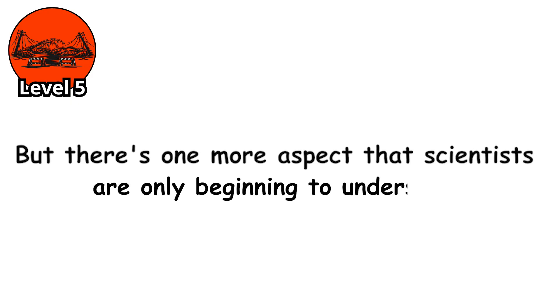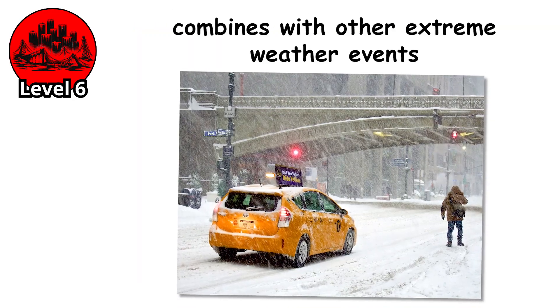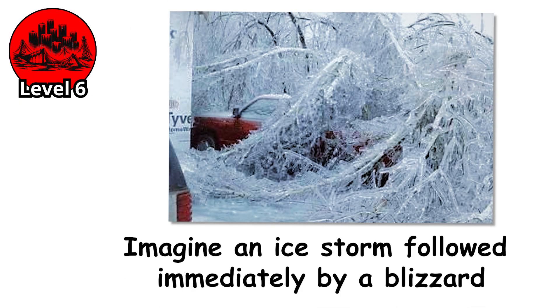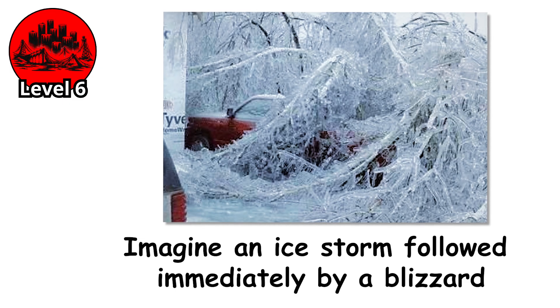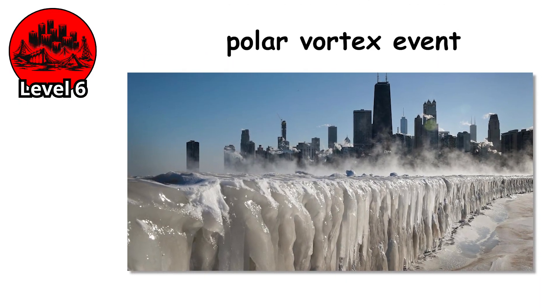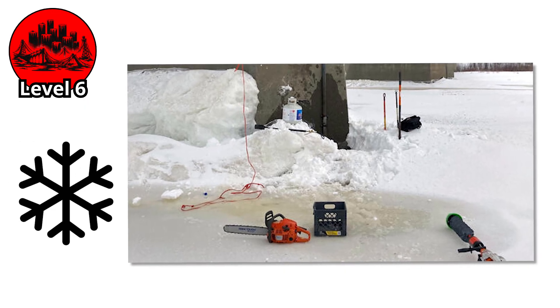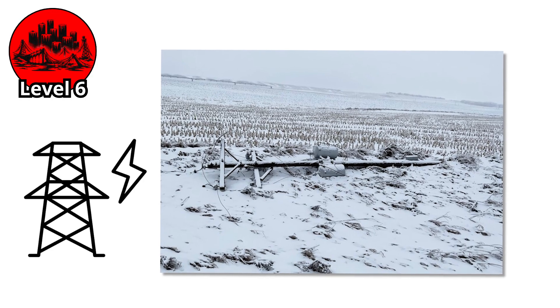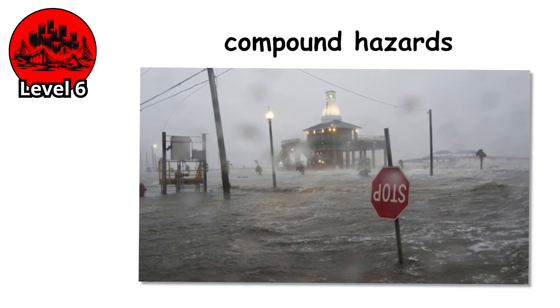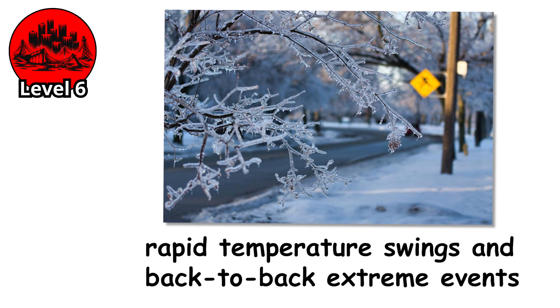But there's one more aspect that scientists are only beginning to understand — something that could make future ice storms even more unpredictable and dangerous. Level 6. What happens when an ice storm doesn't hit alone? What happens when it combines with other extreme weather events to create a compound disaster that multiplies the destruction? Imagine an ice storm followed immediately by a blizzard — ice accumulation damages trees and power lines, then heavy snow piles on top, adding hundreds of additional pounds per branch. Or an ice storm that strikes during a polar vortex event, where temperatures plunge to -20°F or lower. Now you have ice-damaged infrastructure facing extreme cold that makes repairs nearly impossible, and increases heating demands precisely when the power grid is destroyed. Scientists call these compound hazards, and climate models suggest they're becoming more likely.